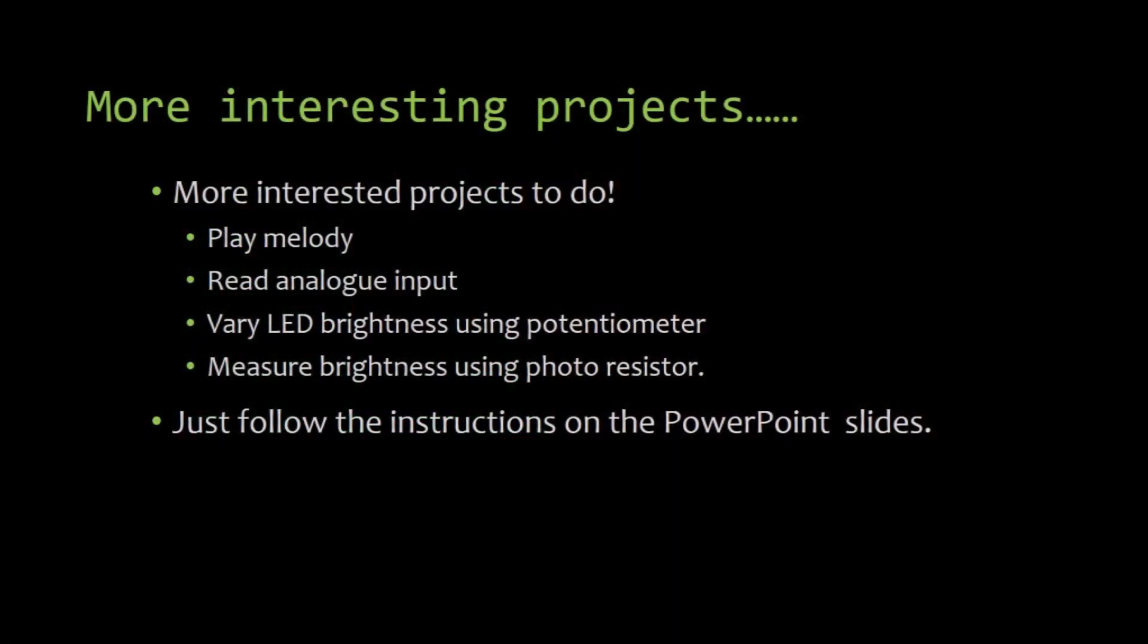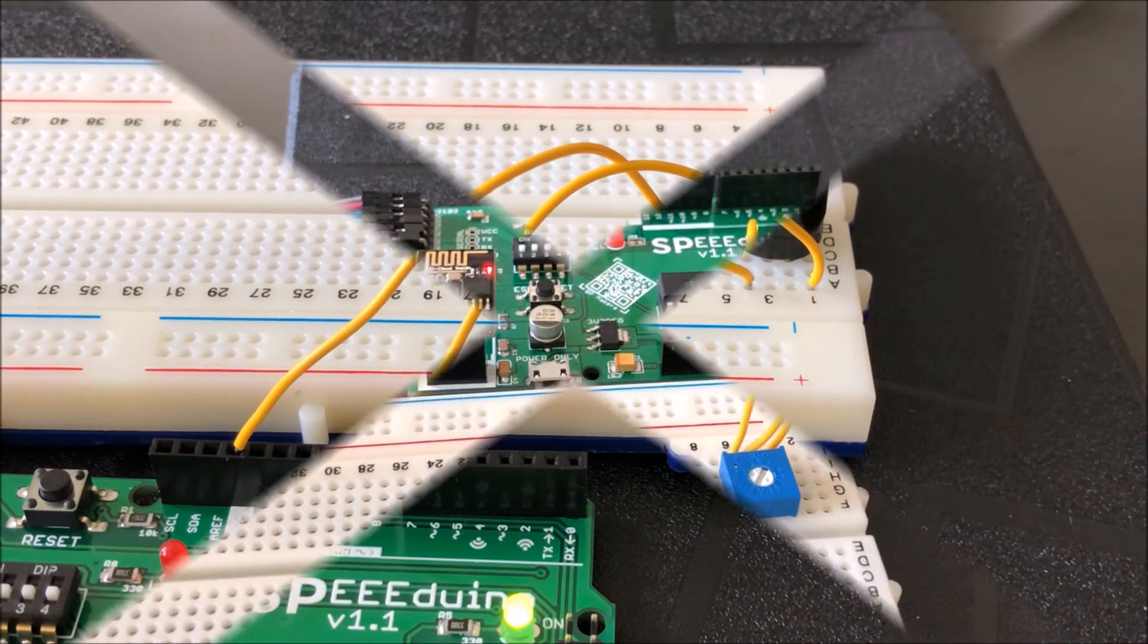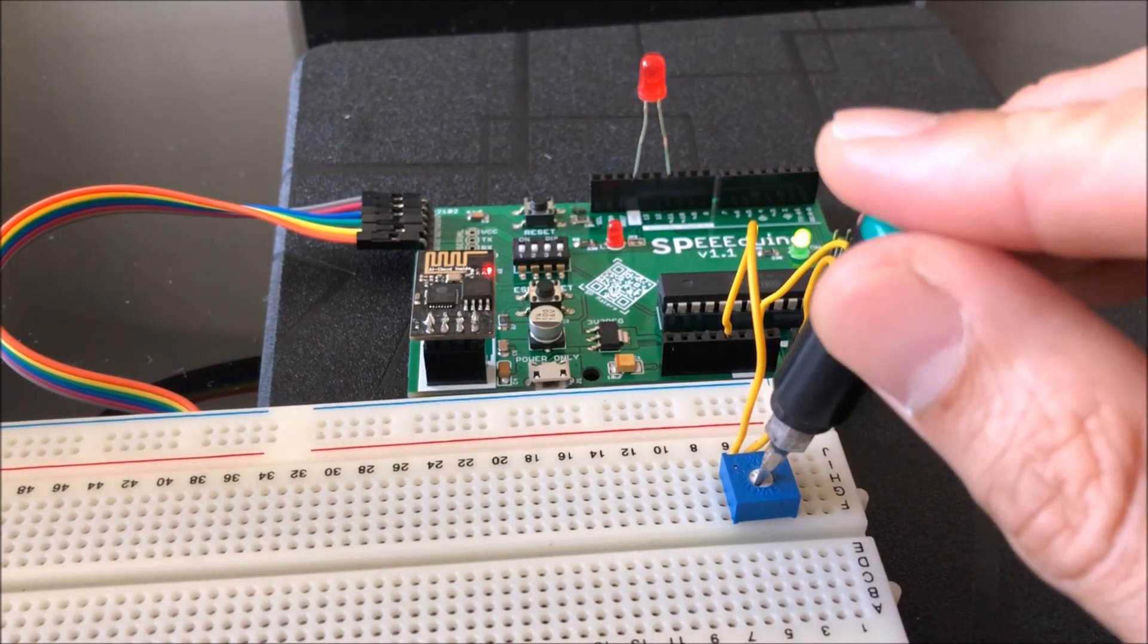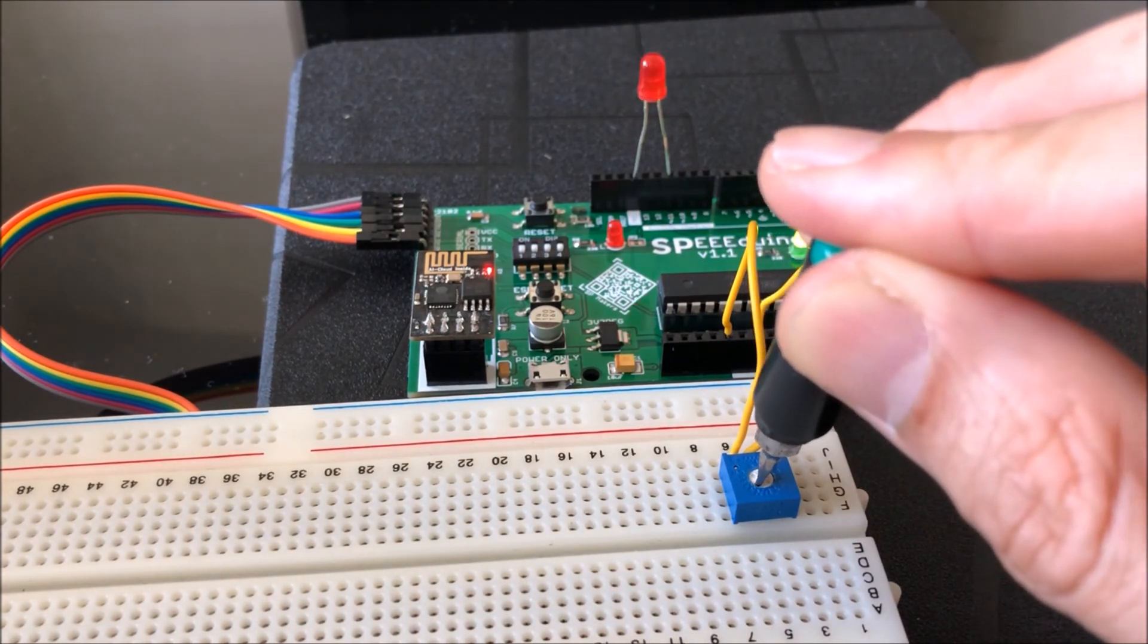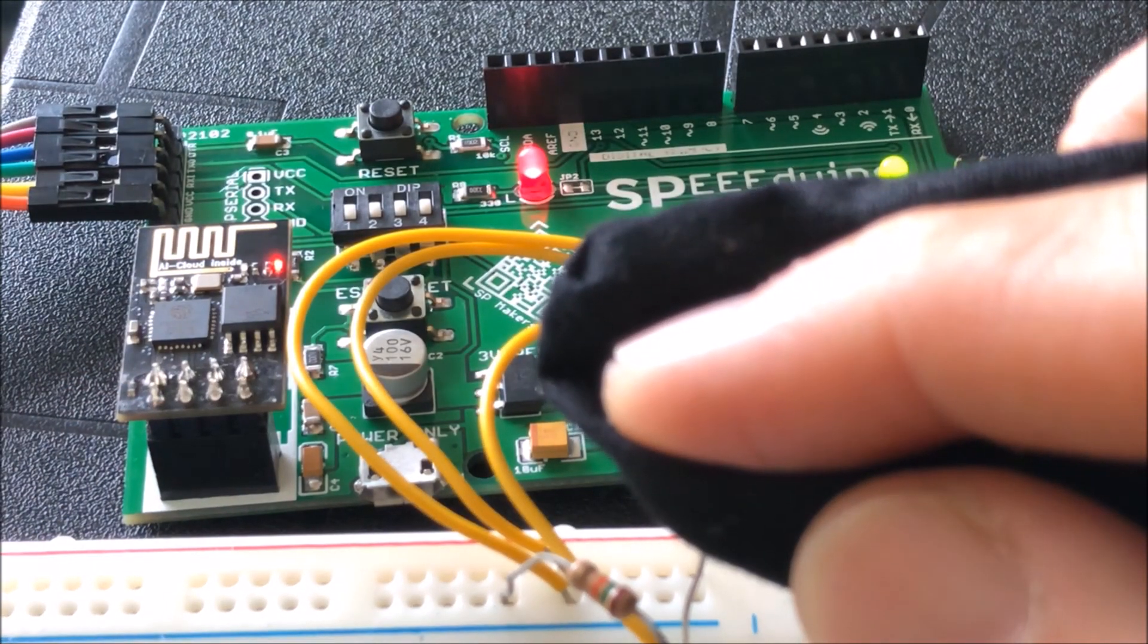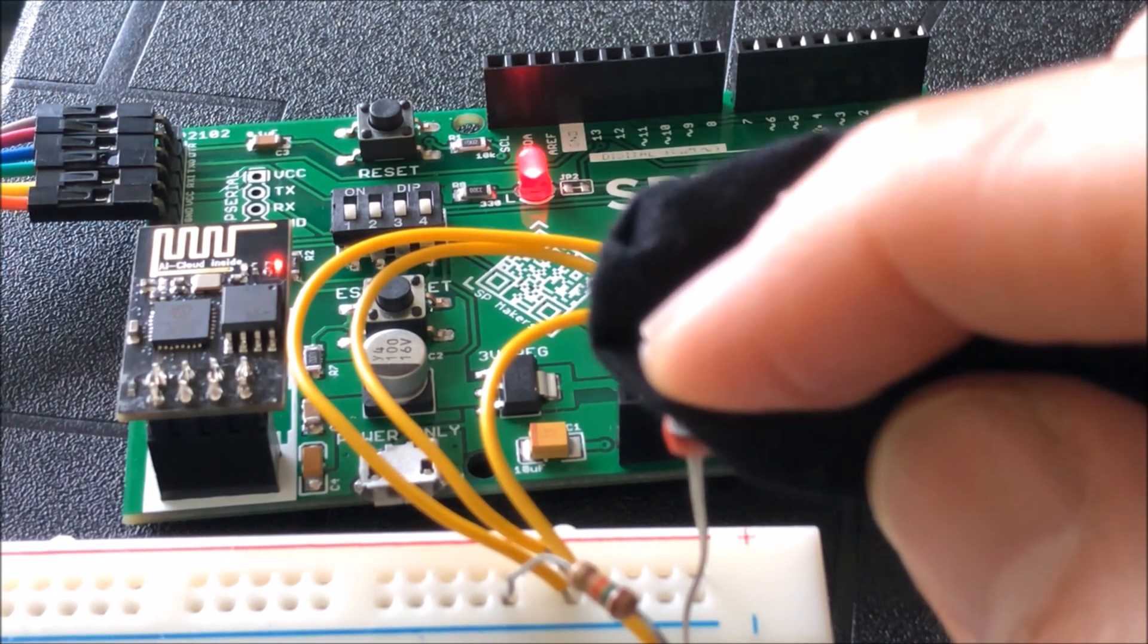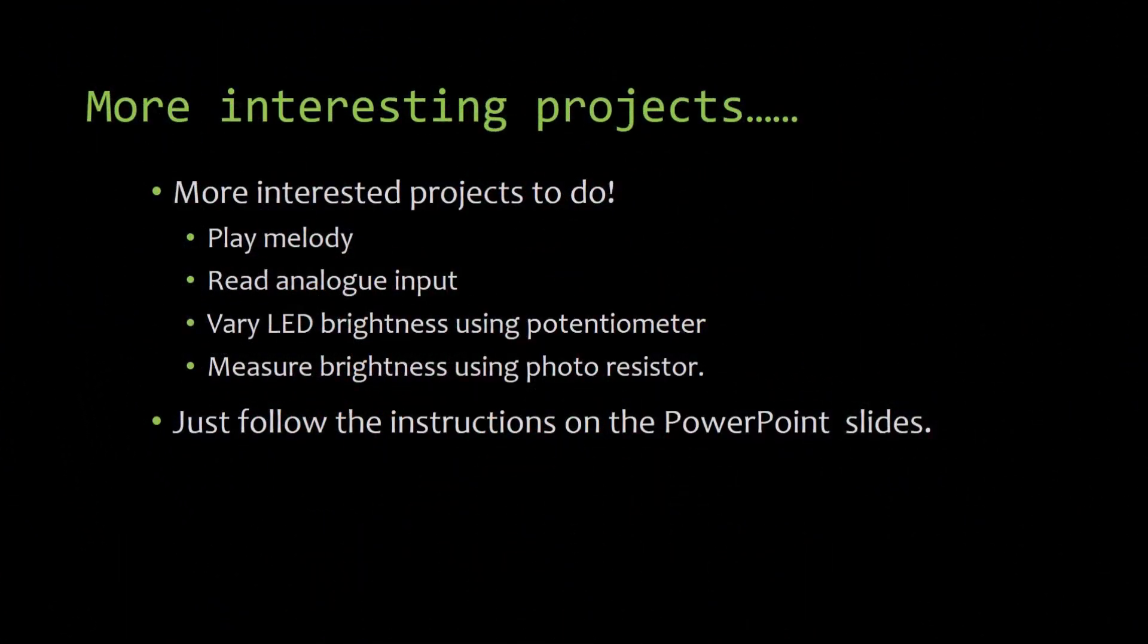We have more interesting projects to do. The Speeduino can be programmed to play melody, read analog input to vary LED brightness using potentiometer, and use a photoresistor to measure brightness. Just follow the instructions on the PowerPoint slides to work on these projects. Have fun!